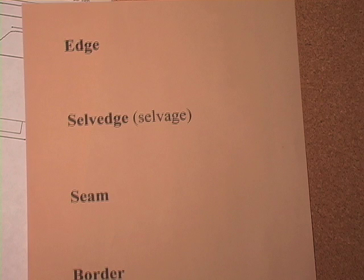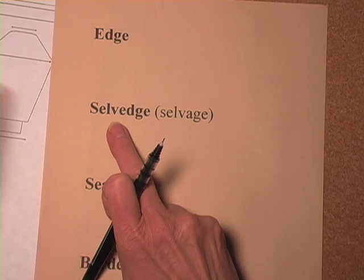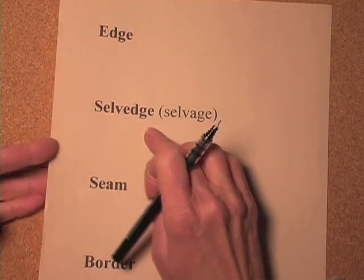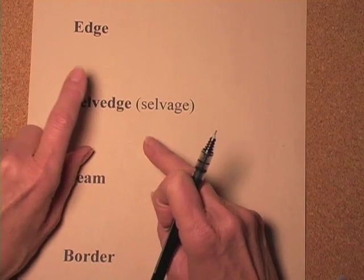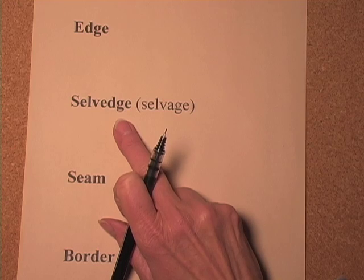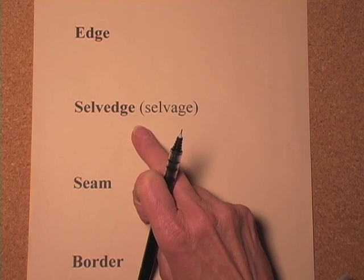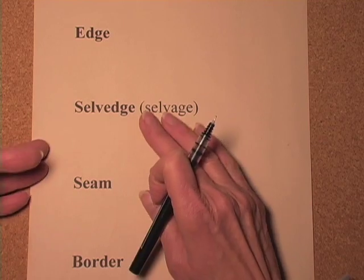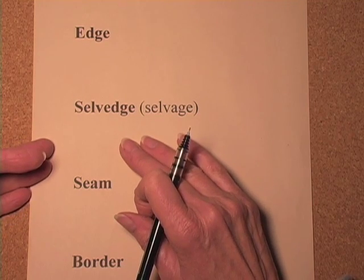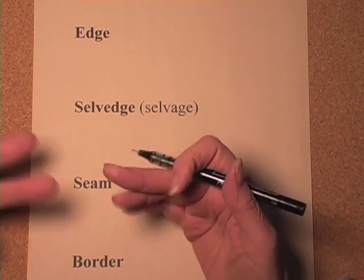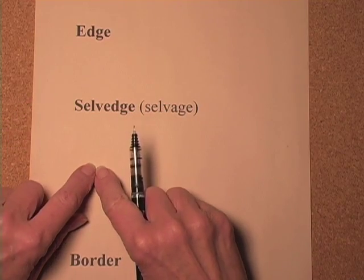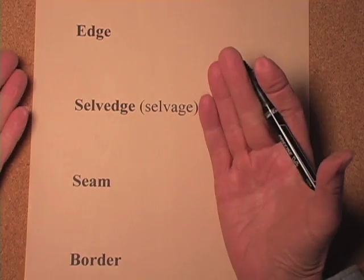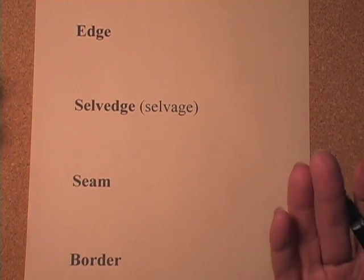Selvedge is a really interesting-looking word. It comes from the late Middle English 'self edge,' meaning self edge, with an older Dutch word behind it. When I started looking at the literature on how people use the term selvedge, I found there wasn't a lot of consistency — people use it to mean different things. One meaning is just the regular edge: a cast-on edge, a bound-off edge, or a side edge. That's a selvedge because it is a kind of self edge, or at least that's what some people call it.